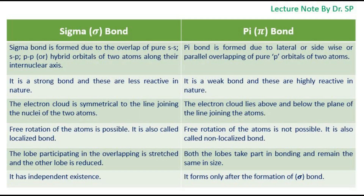Free rotation of the atoms is possible in sigma bond. It is also called a localized bond. Free rotation of the atoms is not possible in pi bond. It is also called a non-localized bond.